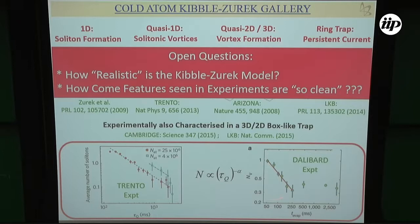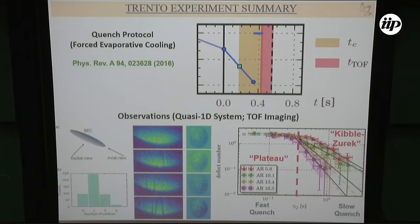In experiments in Cambridge they looked at correlation functions and found nice properties. But in the Trento/Paris experiments, all measurements were done long after the phase transition. Kibble-Zurek really requires counting defects in the transition region — so why does the scaling still hold? That's what I'd like to answer now.